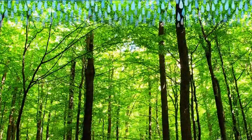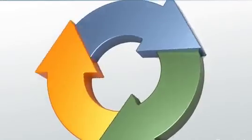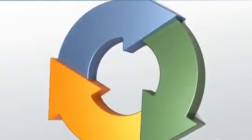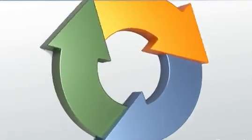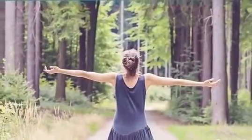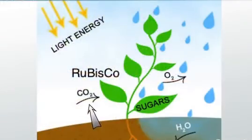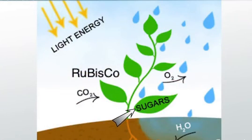The 'cycle' part of the carbon cycle indicates it goes around in a circle with no clear beginning and endpoint. For our purposes, let's start with carbon in living things. Carbon is the main element making up all living things on Earth. Trees take in carbon from the atmosphere and use a process called photosynthesis to turn it into sugar, which the tree then uses to build its structure.